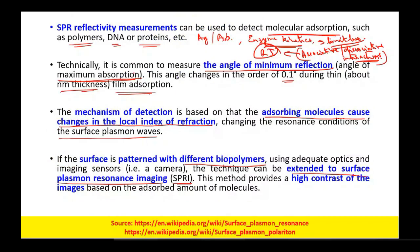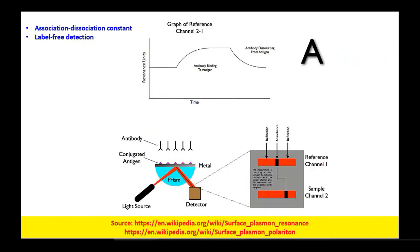As mentioned, we can go for SPRI — Surface Plasmon Resonance Imaging — and it can improve our measurement time. Not only this, it also helps us in getting high-contrast images of the spectrum. This SPRI technology helps us in understanding the association-dissociation constant.